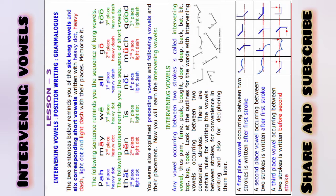Now we start with intervening vowels. Any vowel occurring between two strokes is called an intervening vowel. Examples: palm, fame, peak, bought, door, deep, back, bet, beat, top, bug, took. Look at the outlines for words with intervening vowels occurring between two consonant strokes.